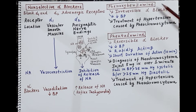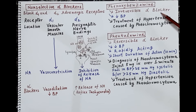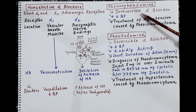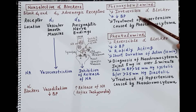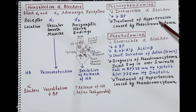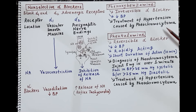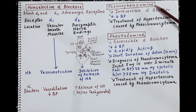Phenoxybenzamine is a non-selective alpha blocker that blocks alpha-1 and alpha-2 receptors. It is an irreversible blocker — the antagonism cannot be reversed. It produces a fall in blood pressure and is used in the treatment of hypertension caused by pheochromocytoma. Pheochromocytoma is a tumour of the adrenal gland in which there is excessive release of adrenaline, causing hypertension.